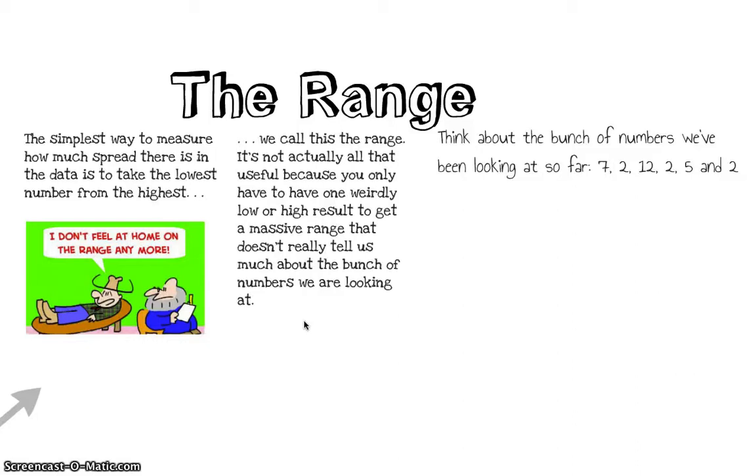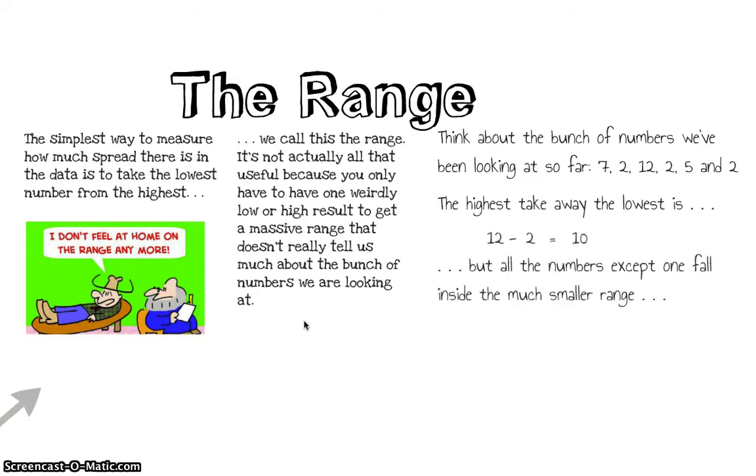Think about ours: 7, 2, 12, 2, 5, 2 again. The highest take away the lowest is 12 take away 2, which comes out as 10. But obviously most of the numbers - all the numbers except the 12 - fall inside of a much smaller range. So if you ignored the 12, you'd get 7 take away 2 is 5. Well, that's half the range, so it would be a bit misleading to use the range as a description for this group of numbers.